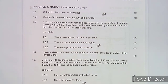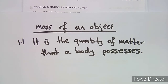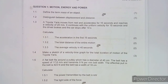Let's quickly work through the question on motion, energy and power. The first question is to define the term 'mass of an object.' The mass is the quantity of matter that a body possesses. That's a straightforward definition.